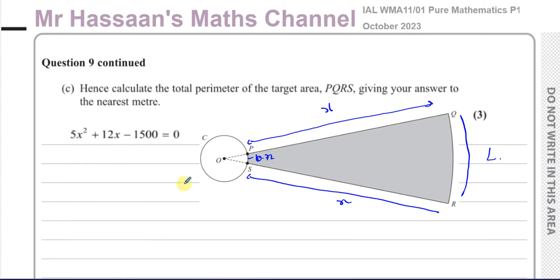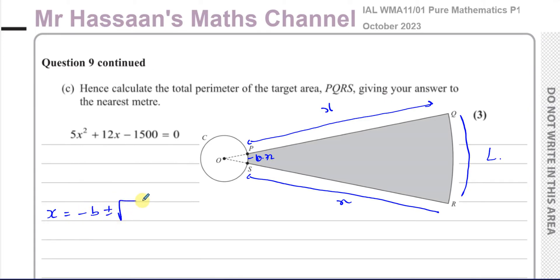To solve 5X squared plus 12X minus 1500 equals 0, the safest approach is to use the quadratic formula. You should not just use a calculator and write down the answers — you must show the working using either factorisation, the quadratic formula, or completing the square, otherwise you will lose method marks.